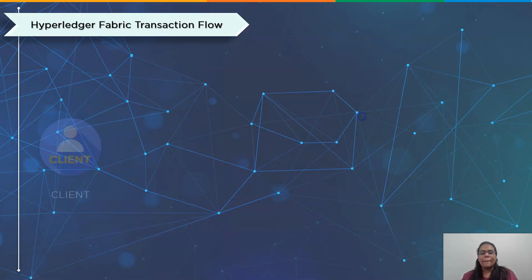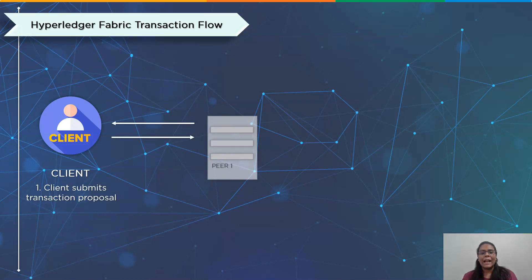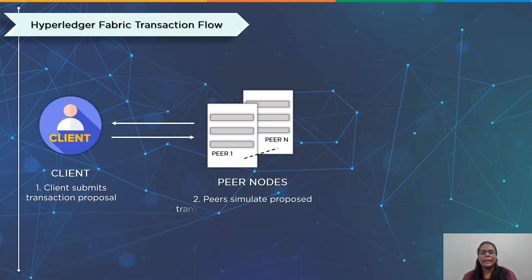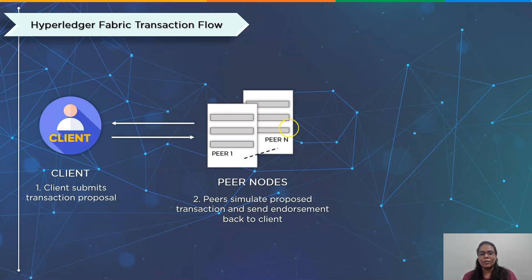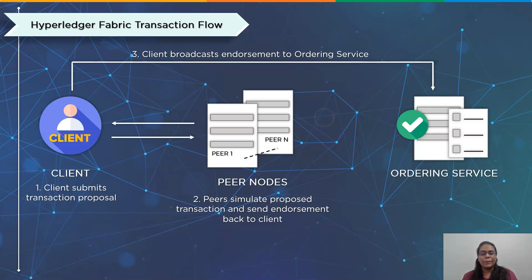The transaction flow starts when a client application sends a transaction proposal to peers in each organization for approval. Second, the peers confirm the identity and legitimacy of the submitting client. They then simulate the result of the proposed transaction, and if the results match what was anticipated, they send the client an endorsement signature. Third, once the client has the required number of endorsements as specified in the endorsement policy, it gathers recommendations from peers and transmits the transaction to the ordering service.